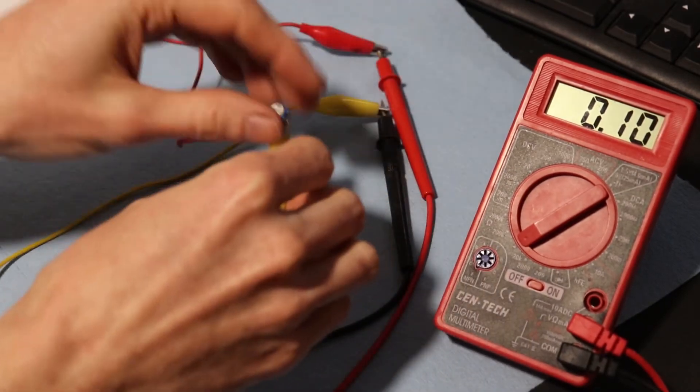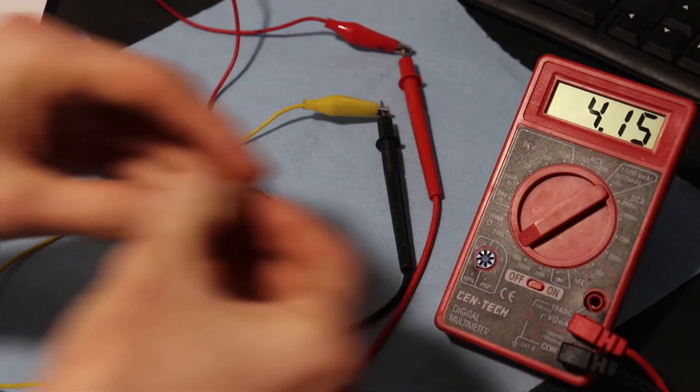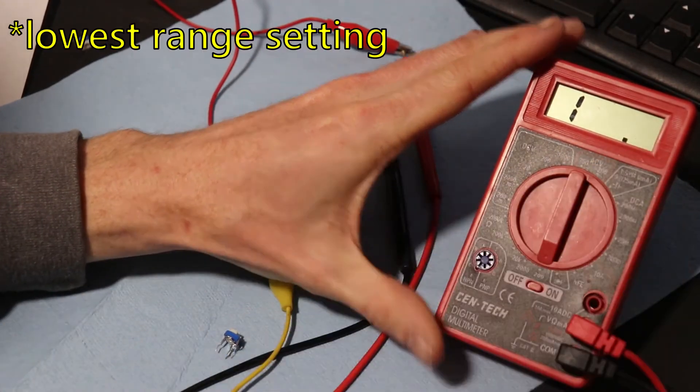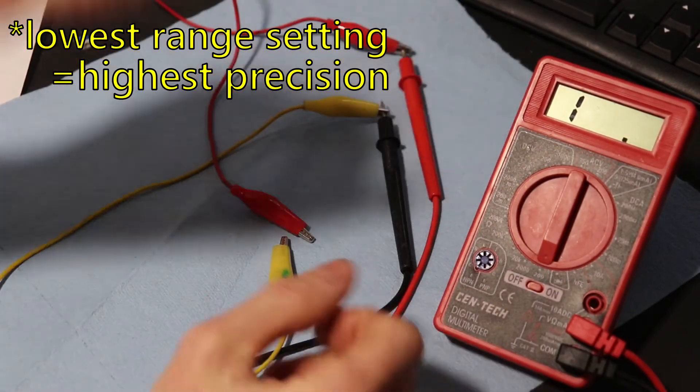Let's use another example. Now like I said, you always want to go the lowest precision you can. So I usually start out at the 200.